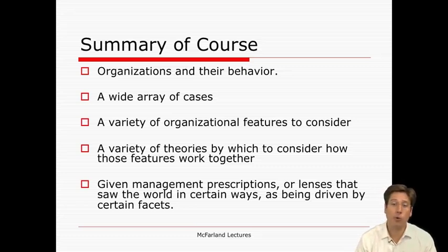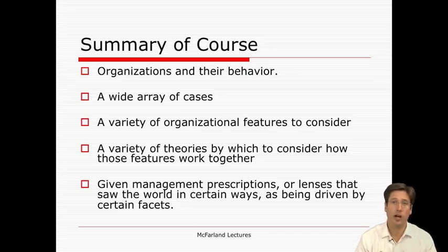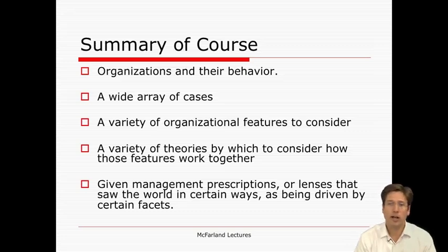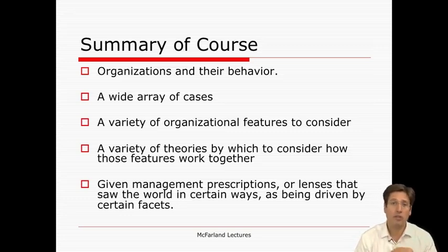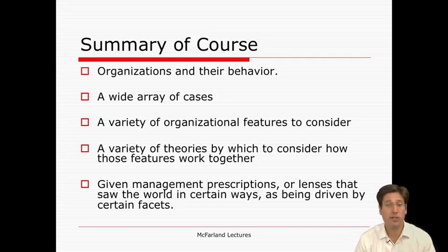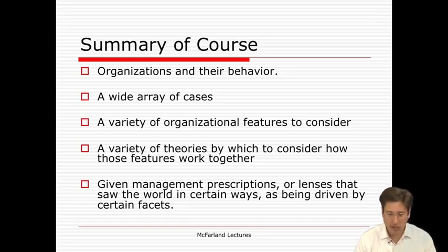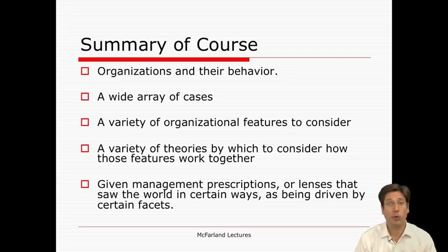You were given a variety of organizational features to consider as well, like the environment, the social structure — such as behavioral, normative, and cognitive features from surface to deep structures. You also covered things like participants, technology or tasks, and even the shared goals of an organization. All of these elements were meant as a language and as a checklist by which to consider the complexity of organizations more deeply and thoroughly. You were also given a variety of theories by which to consider how these features work together.